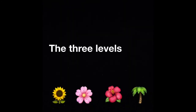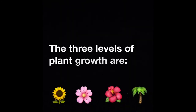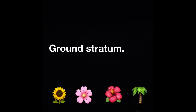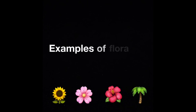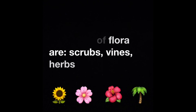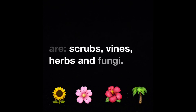Flora: the three levels of plant growth in tropical rainforests are the canopy, understory and ground stratum. Examples of flora include shrubs, vines, herbs and fungi.